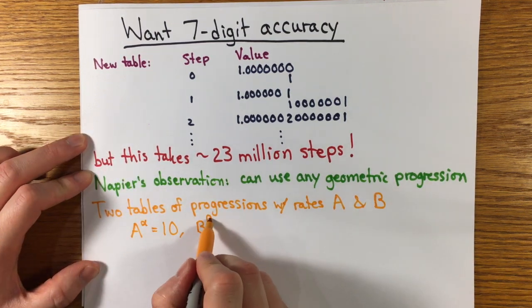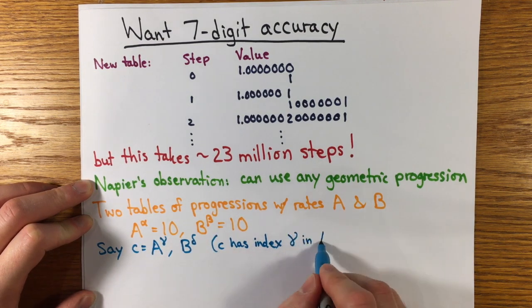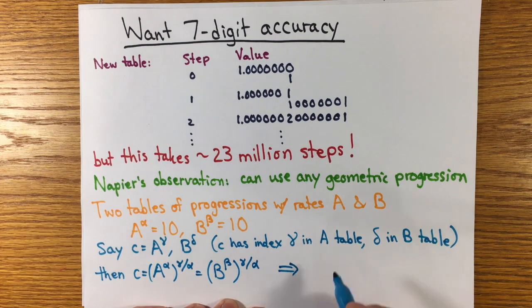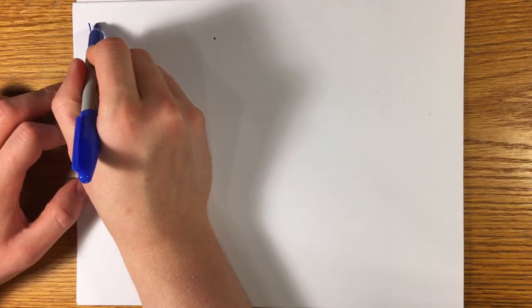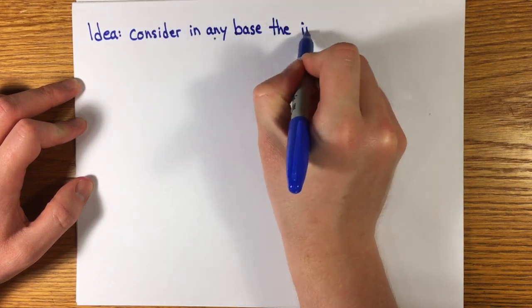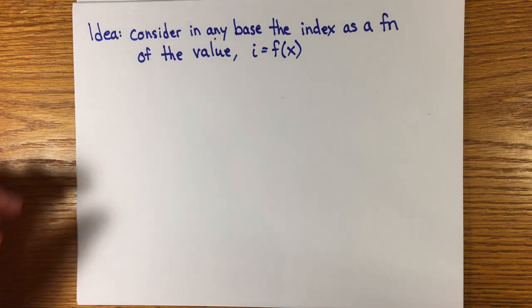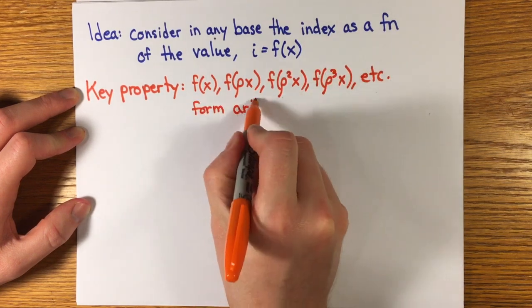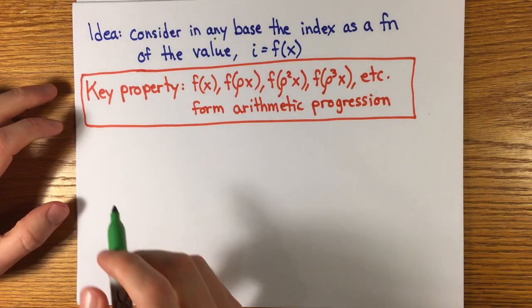What I'm going to do here is follow the essence of Napier's thinking minus the particular details of his version of the logarithm, which would confuse the issue. First of all, he figured out that you could make tables based on different geometric progressions of rates A and B, and then you could recover the index of a number in the base B if you knew the index in base A and the number of indices alpha and beta to reach 10 in both tables by the laws of exponents. So it didn't really matter what base was used. Then if you're free to consider any base, the key property of the index, or step function, is that it converts any geometric progression to an arithmetic one. That is, for any rho, f of x, f of rho x, f of rho squared x, etc., all form an arithmetic progression.